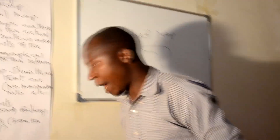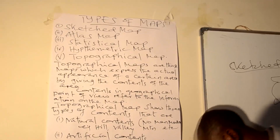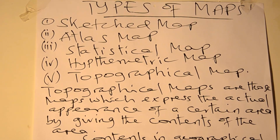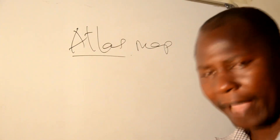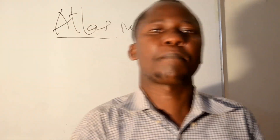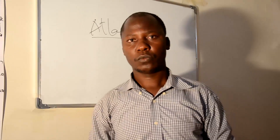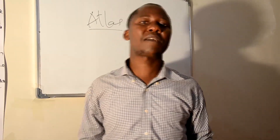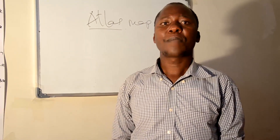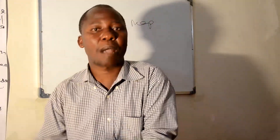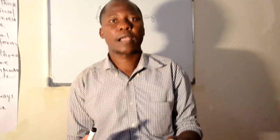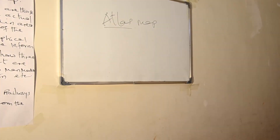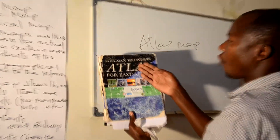The second type of map is called the atlas map. Dear students, an atlas map is a kind of map whereby there is a gathering or combination of different maps to make up a book. I think in Form 1 or in primary school you discovered this kind of map. It is called an atlas map because there is a combination of different maps which, when joined to each other, form a certain book.